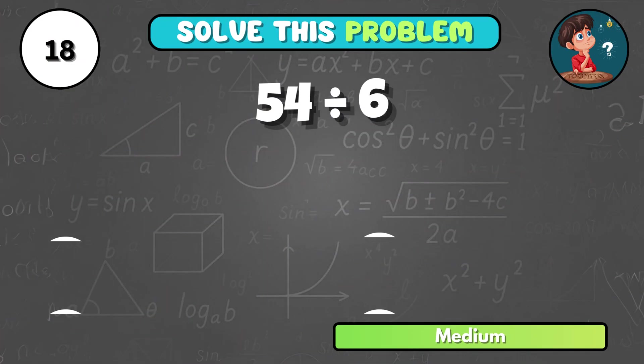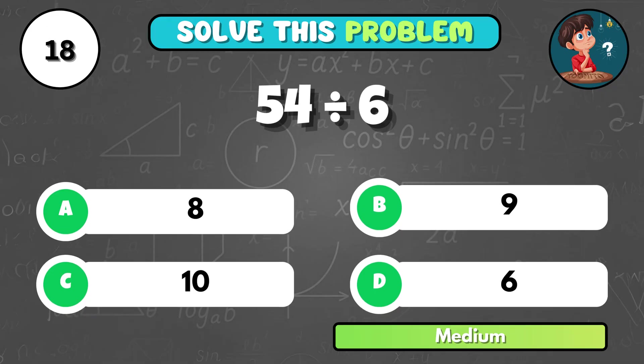What is the result of 54 divided by 6? It equals B, 9.